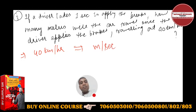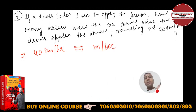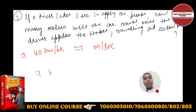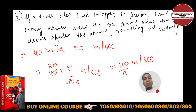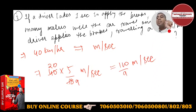I have already told you — छोटी unit में change करना है। छोटी unit में change करते हैं: 40 into 5/18 — यह आ गया meter per second। So this is the speed in terms of meter per second: 100 by 9 meter per second।